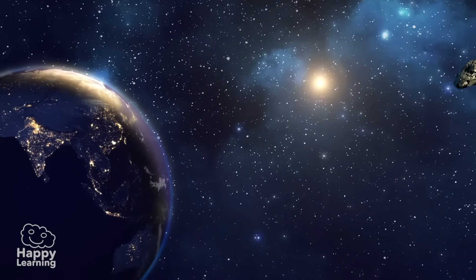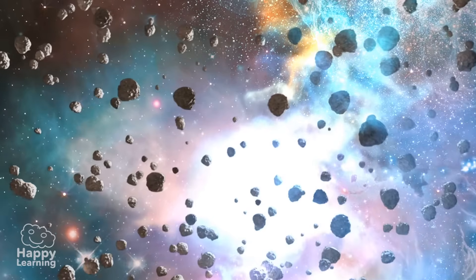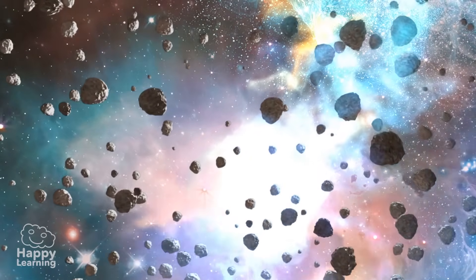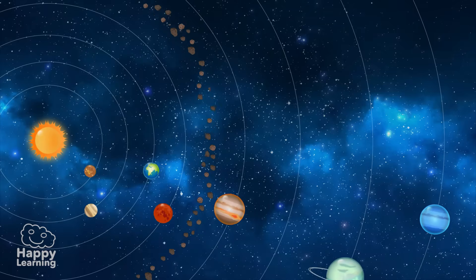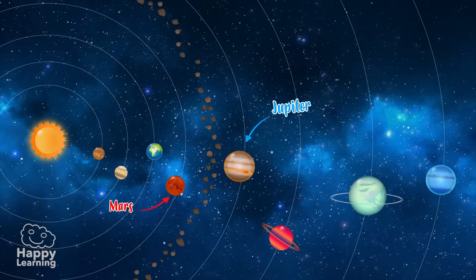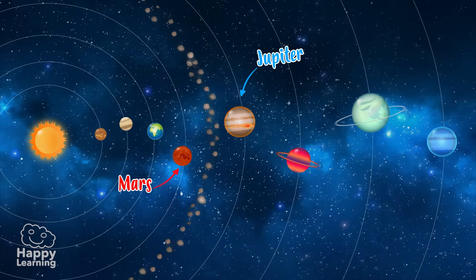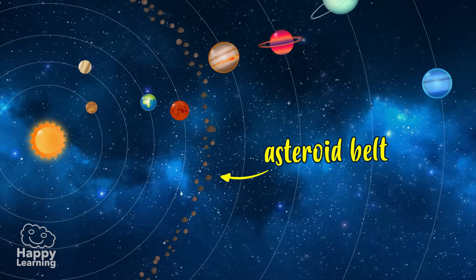In our solar system, there are thousands and thousands of asteroids. Most of them are between Mars and Jupiter, and this zone is called the asteroid belt.